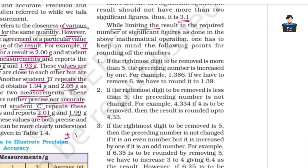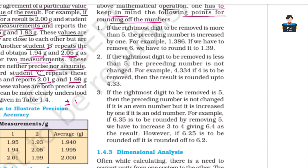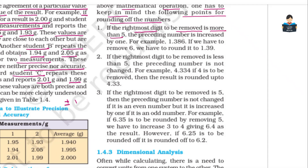While limiting the result to the required number of significant figures, one has to keep in mind the following rules for rounding off numbers. Rule 1: If the rightmost digit to be removed is more than 5, the preceding number is increased by 1.